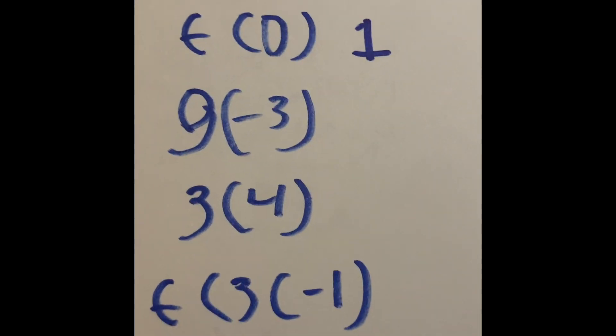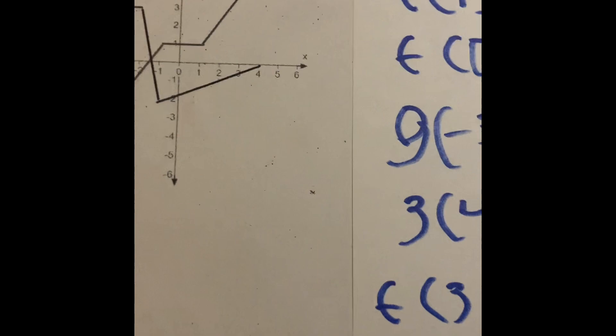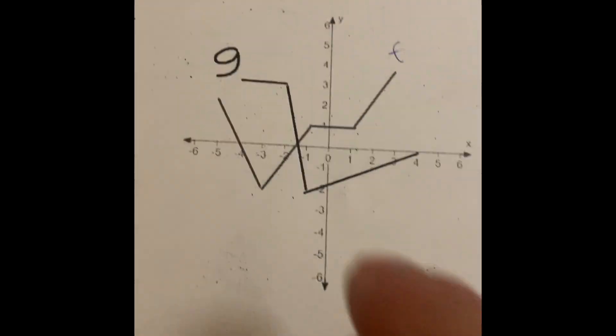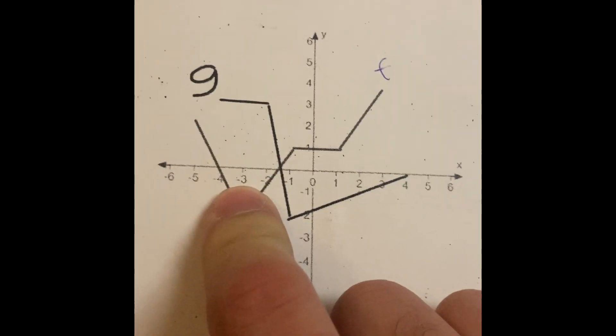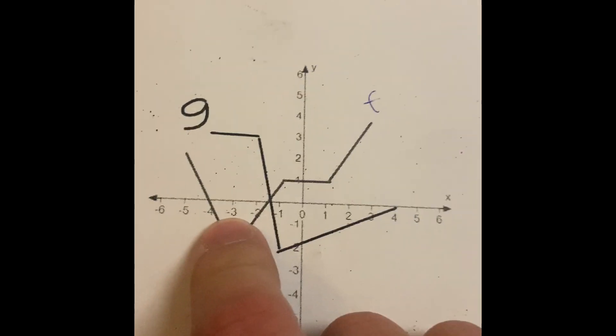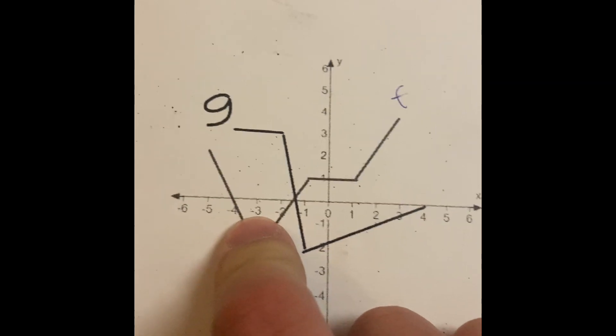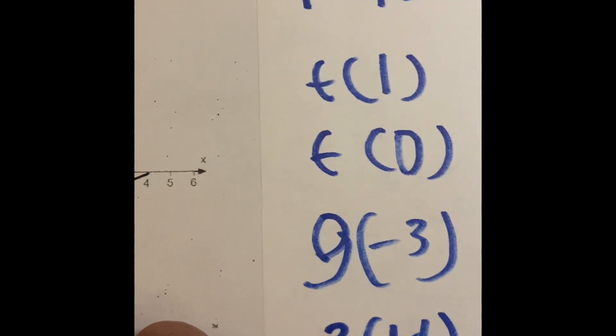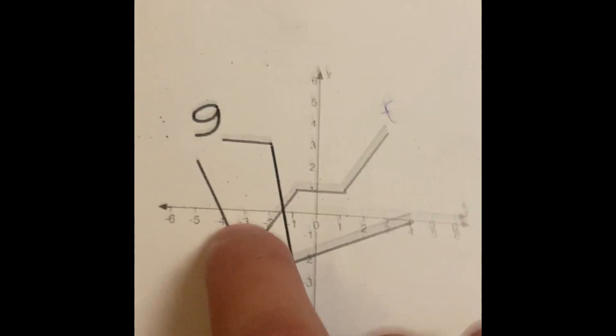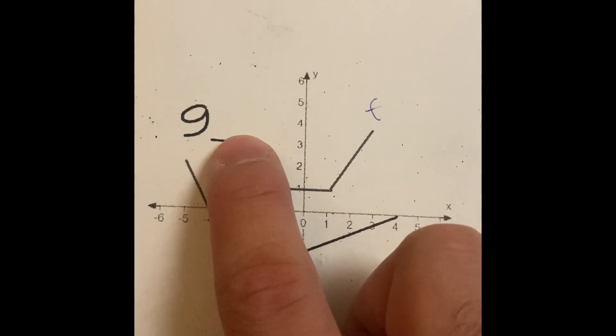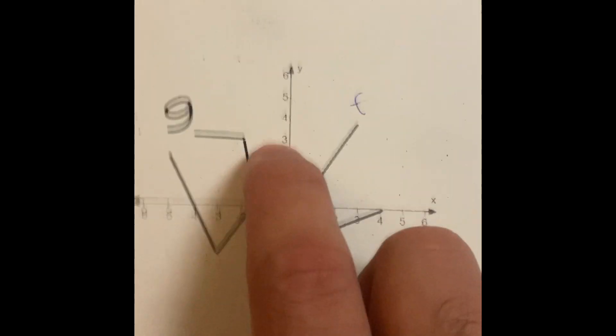The next one is the function of g, which is negative three. So we start here at zero and go one, two, three left spaces across the x axis, because negative three is our x. But since we have a g instead of an f, we have to go to the g line, which means one, two, three, hey, it looks like it's three right here.